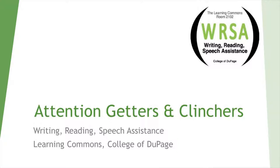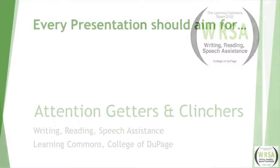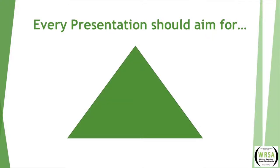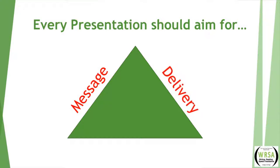Welcome to today's presentation on attention getters and clinchers. Every presentation should aim to look like an equilateral triangle where one side is a very strong message, another side is very strong delivery, and the final side is very strong visuals. I'm sure you can recall a time when the content was good, the delivery was good, but the visuals were just not engaging. Aiming for an equilateral triangle will help you have a successful presentation.